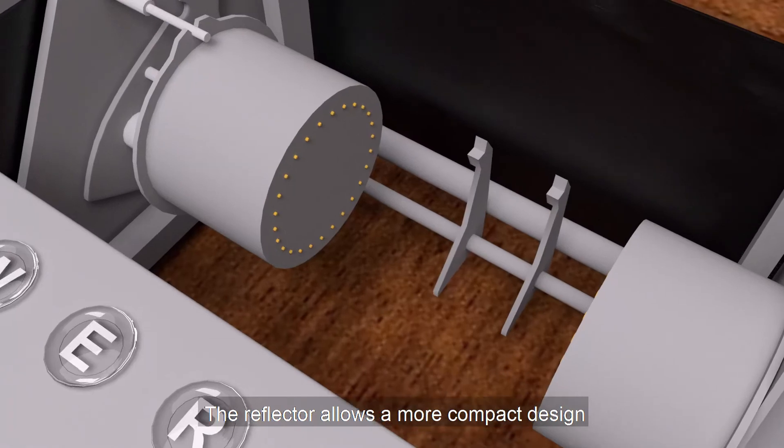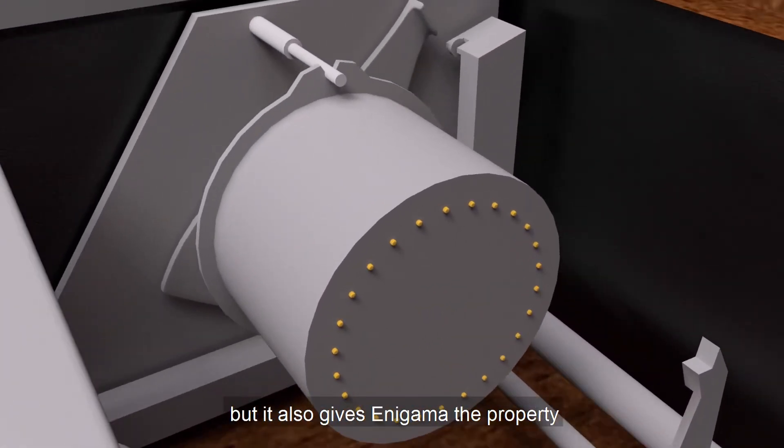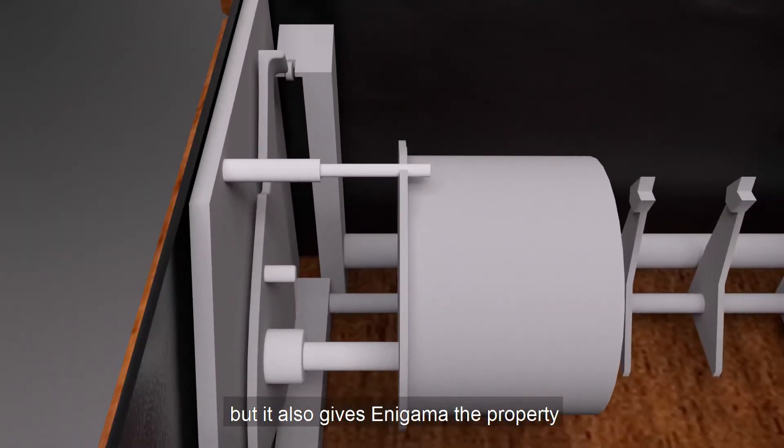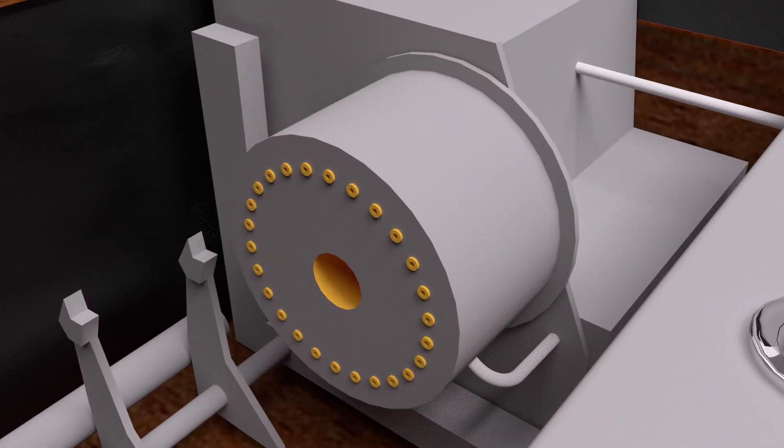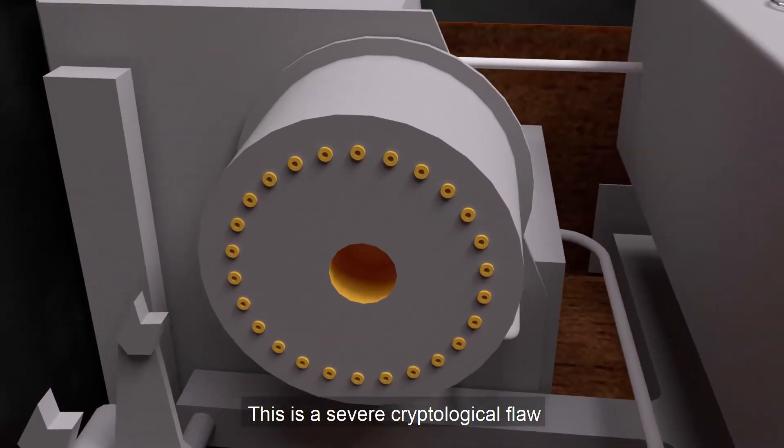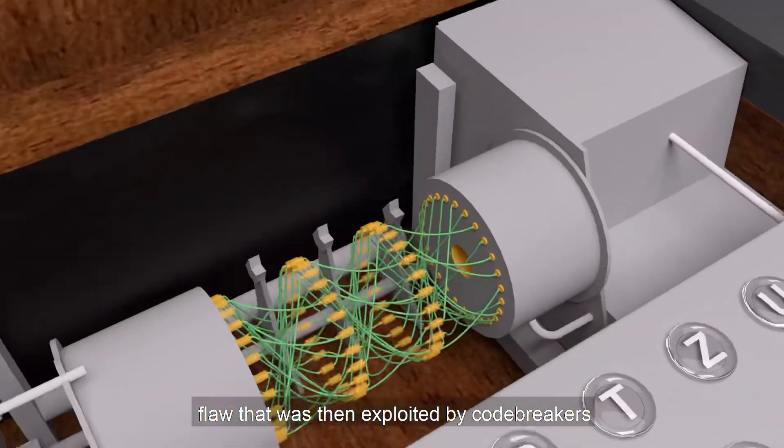The reflector allows a more compact design, but it also gives Enigma the property that no letter ever encrypted to itself. This is a severe cryptological flaw that was then exploited by codebreakers.